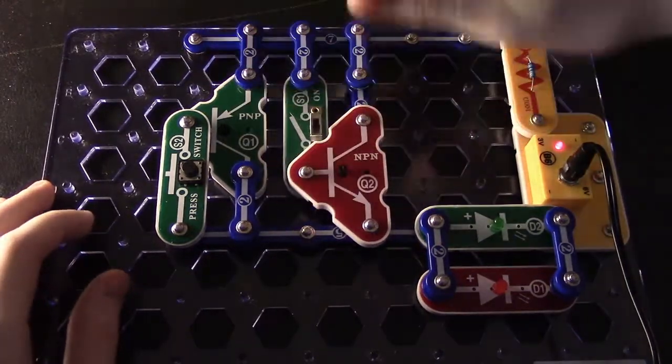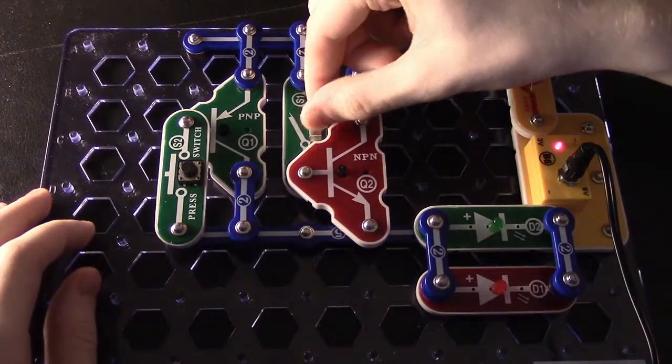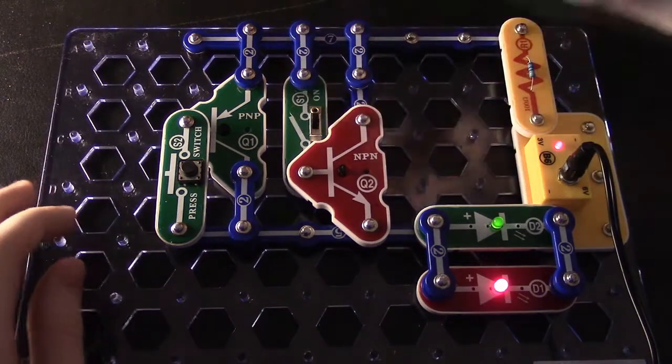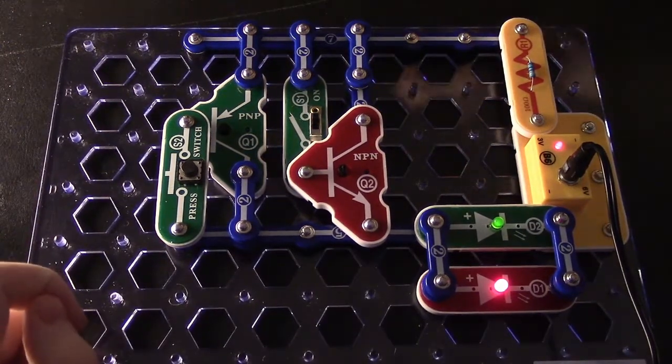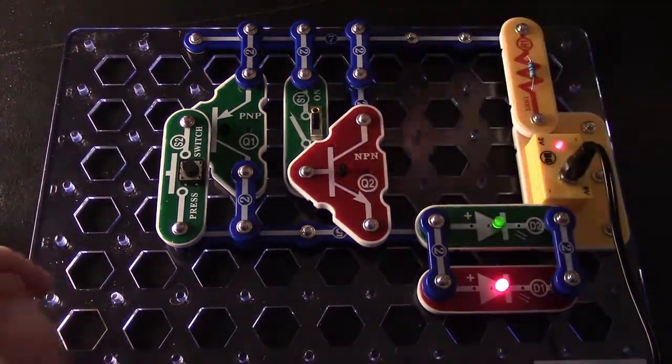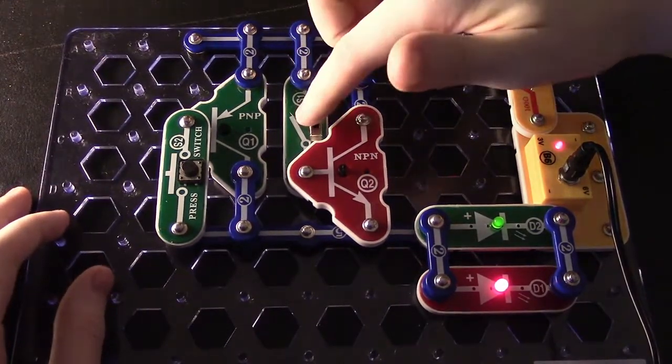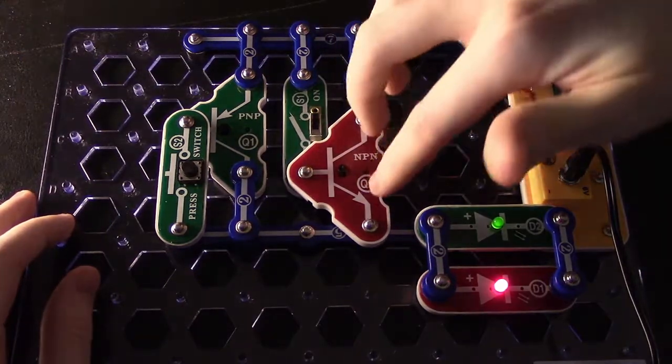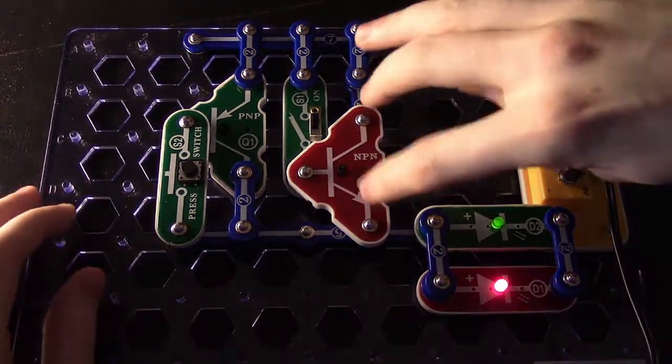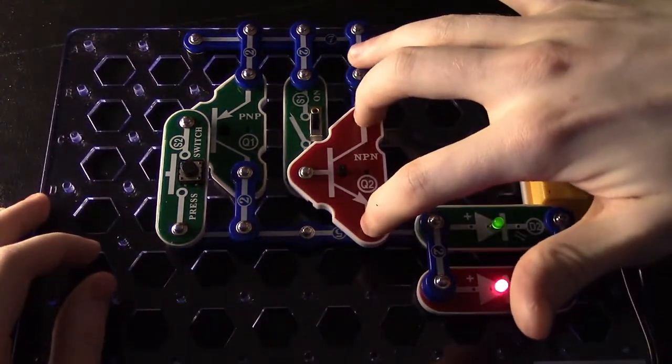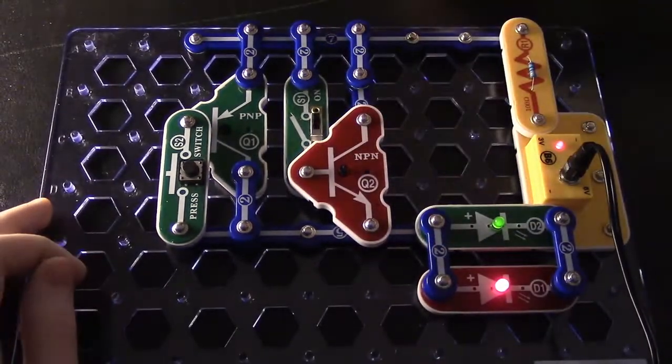If I turn the switch for the NPN on, both LEDs light up. You see the green light up and you see the red light up. This is feeding a current to the base, which is then telling the transistor to turn on, which then connects the emitter and collector together and completes our circuit.